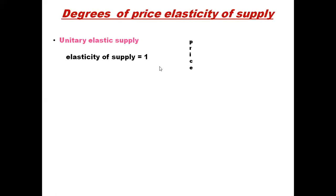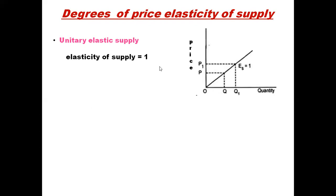Unitary elastic supply has an elasticity of one, where the percentage change in quantity supplied is exactly equal to the percentage change in price. The curve is a straight line passing through the origin. When drawing it in the exam, ensure that the gap from Q to Q1 equals the gap from P to P1 — equal amounts of change on both sides.